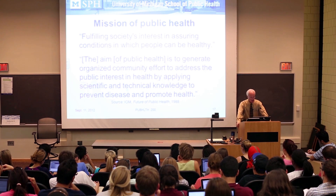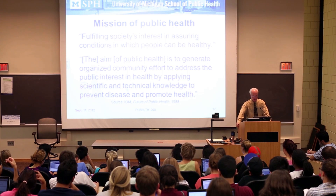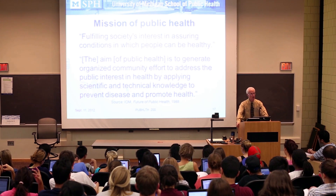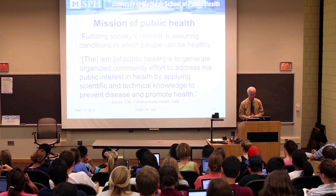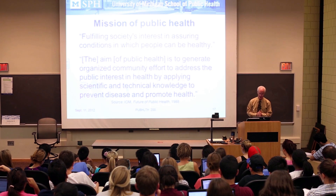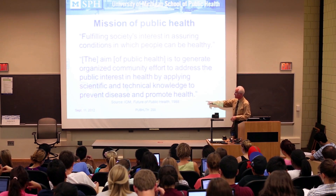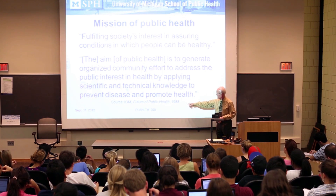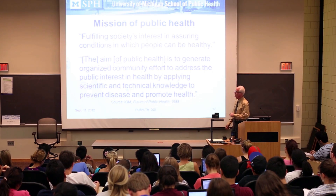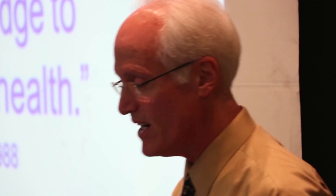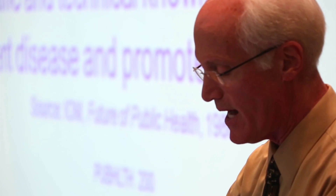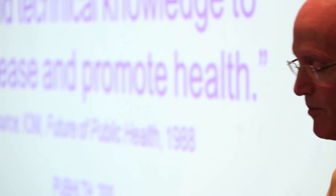What's public health trying to do? It is trying to fulfill society's interest in assuring conditions in which people can be healthy. This is a statement from the Institute of Medicine, Future of Public Health Report in 1988. The aim of public health is to generate organized community effort to address the public interest in health by applying scientific and technical knowledge to prevent disease and promote health.